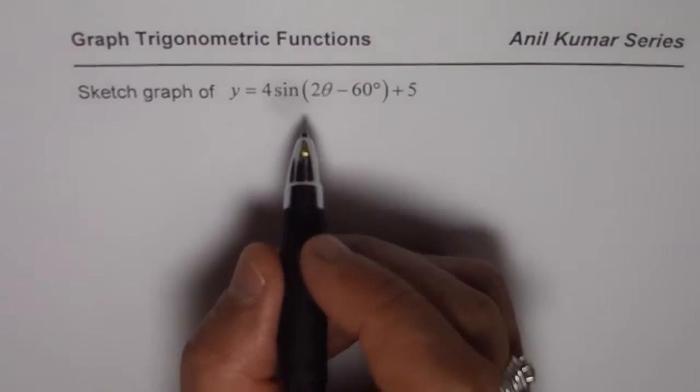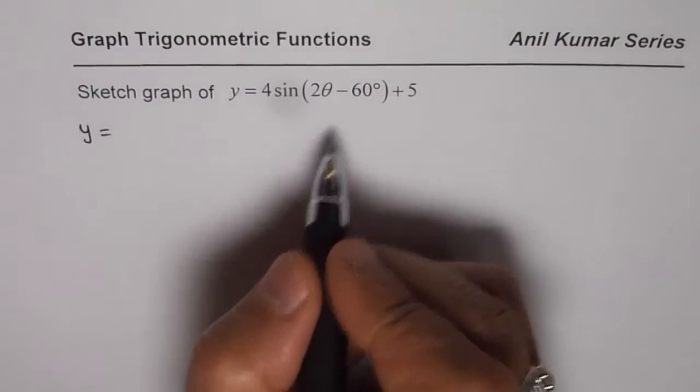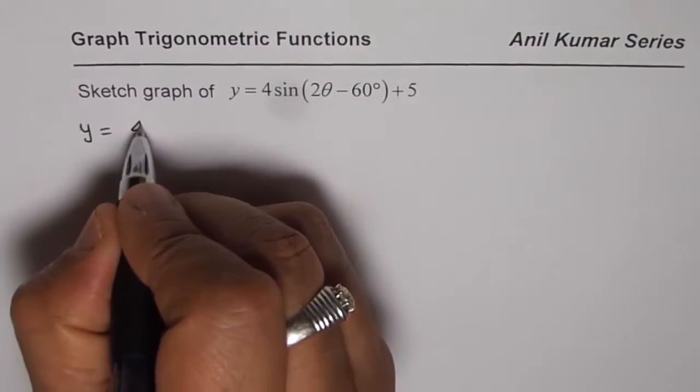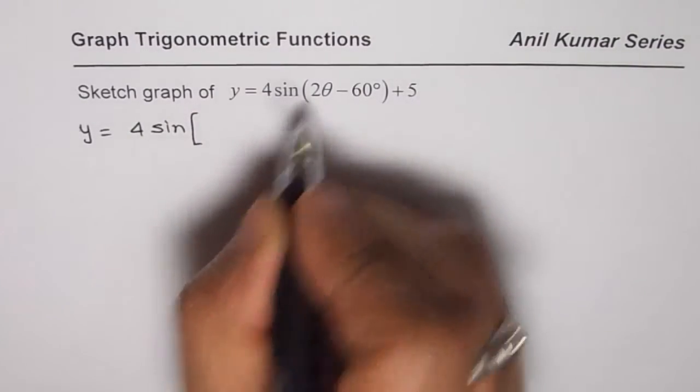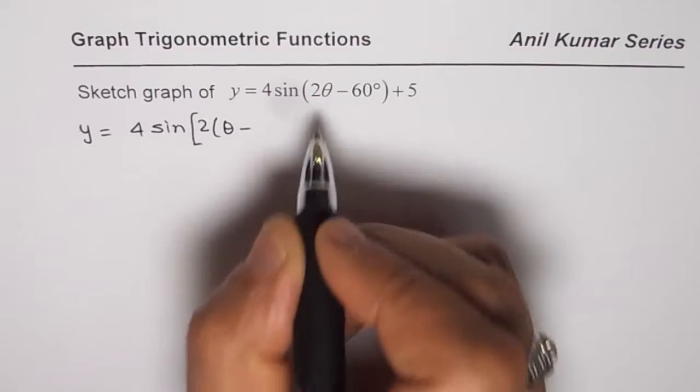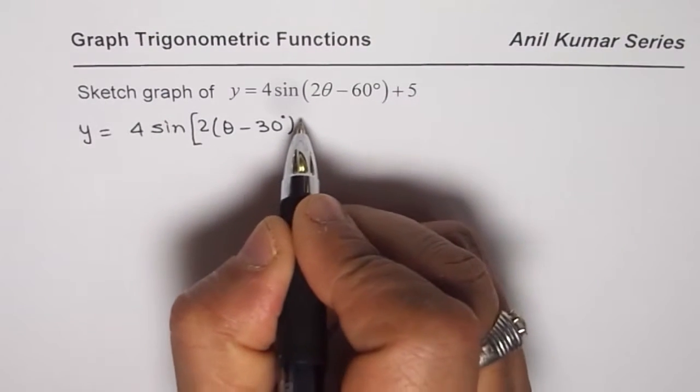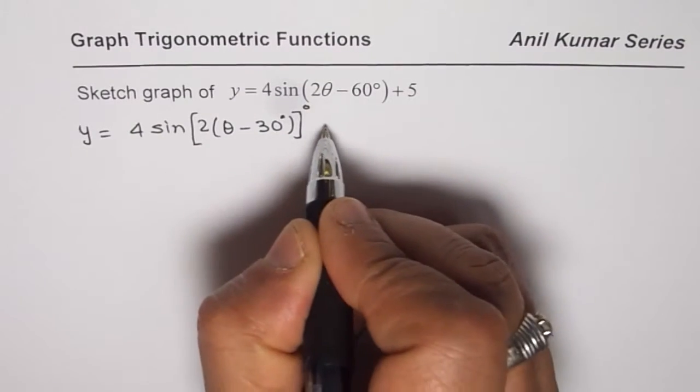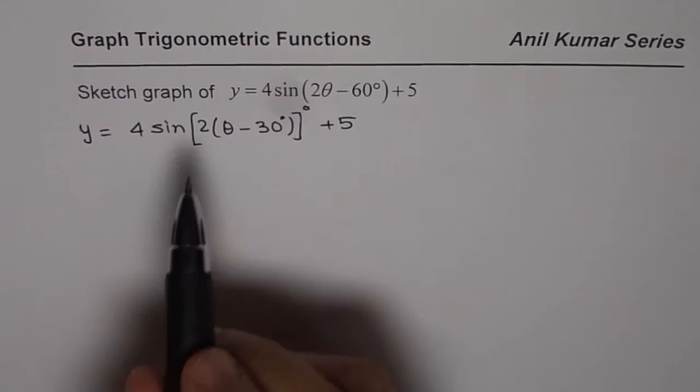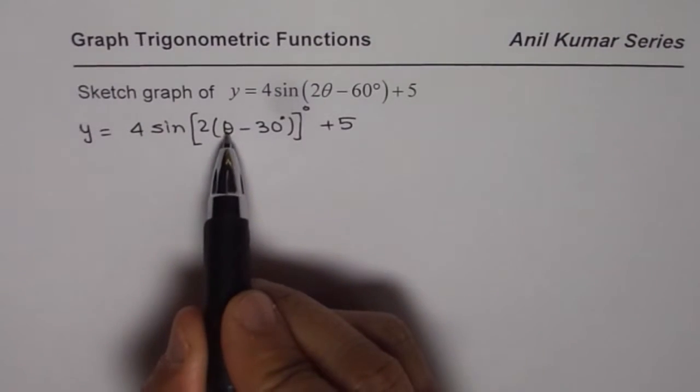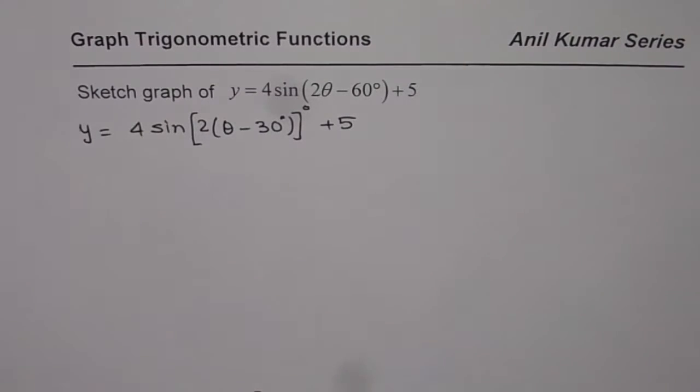First step is to write it properly so we understand the horizontal transformations. We have 4 sine, factor 2 out then you get theta minus 30 degrees plus 5. We should check: 2 times theta is 2 theta and 2 times minus 30 is minus 60, so that is perfect.